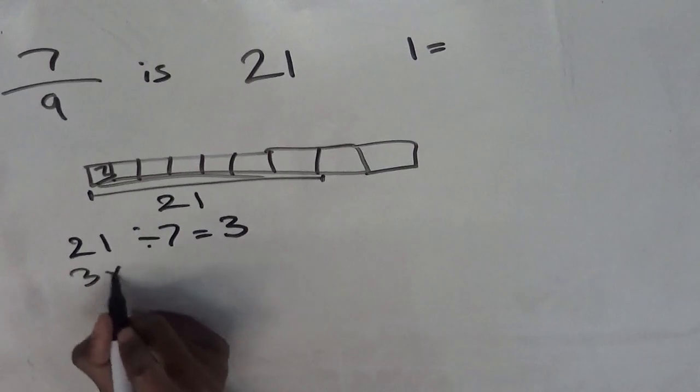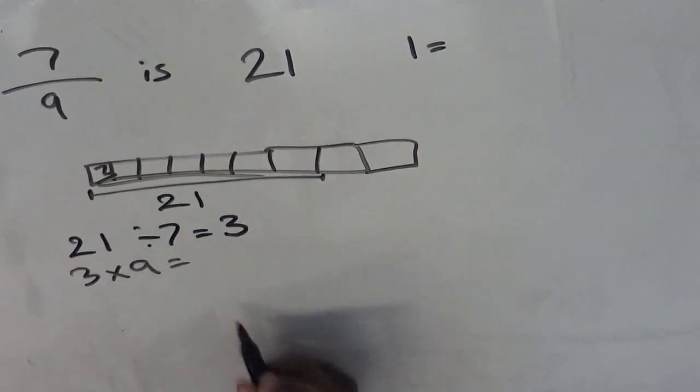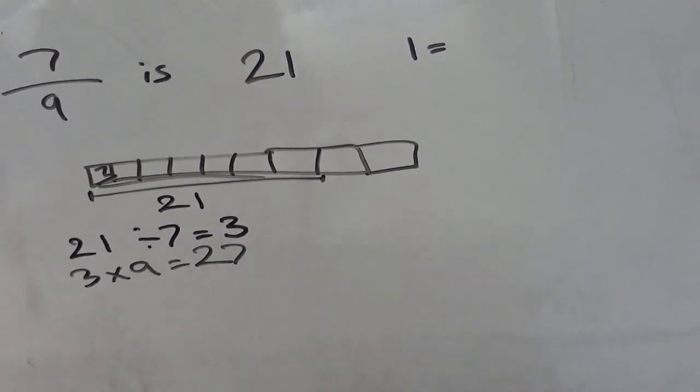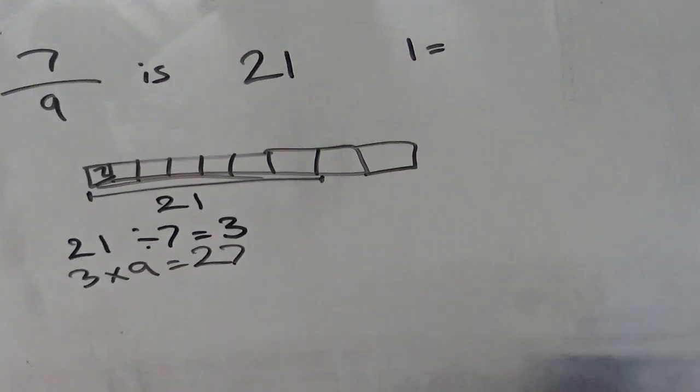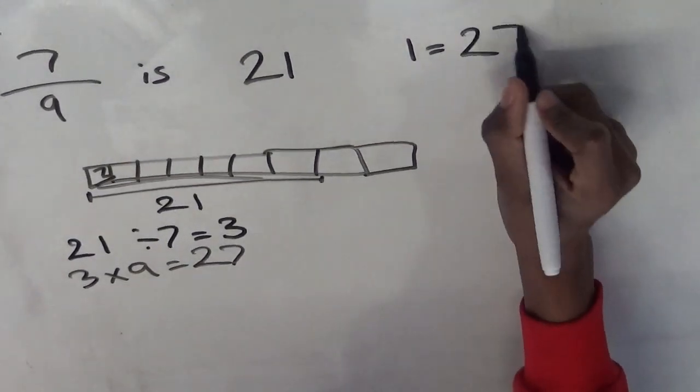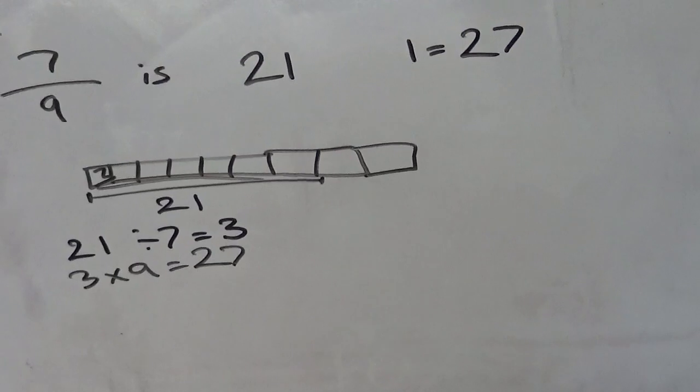And then do 3 times by the amount of blocks in a whole bar, which would give us 27, giving us the total of the whole bar, which is now 27. Thank you for watching.